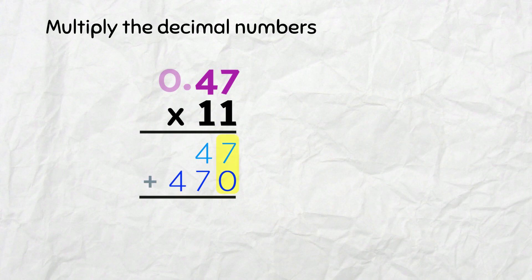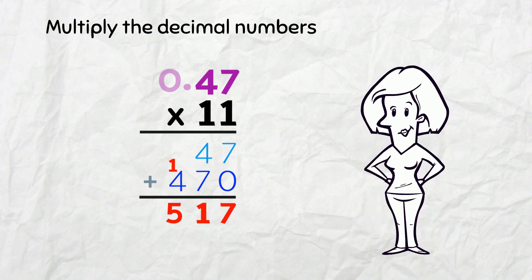First row: 7. Then 7 and 4 is 11. And here, 4 and 1 is 5. 517. Now we put in the decimal point!